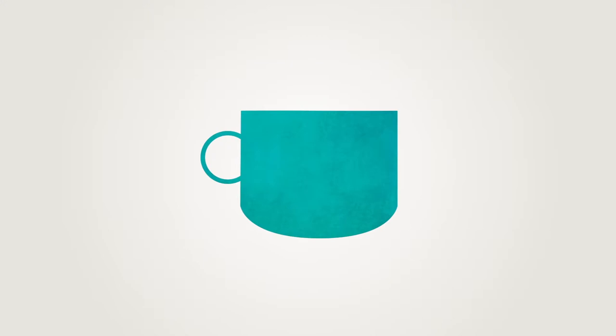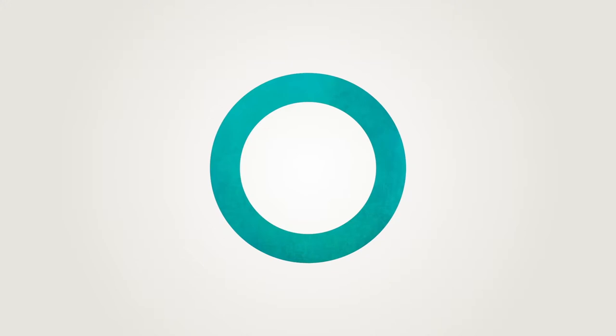For instance, no matter how a coffee cup is transformed, the hole in its handle can't be removed. This makes it topologically equivalent to a torus.